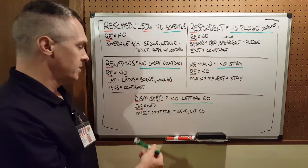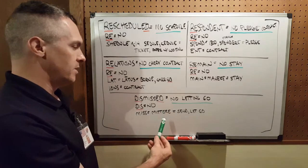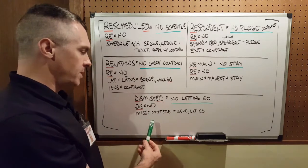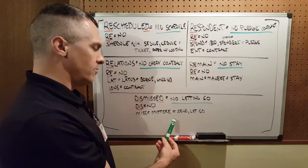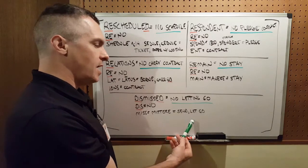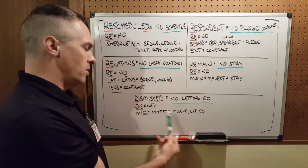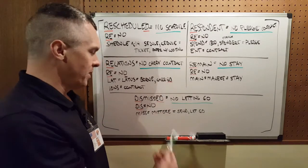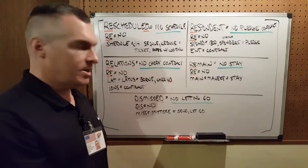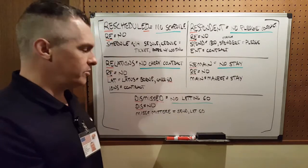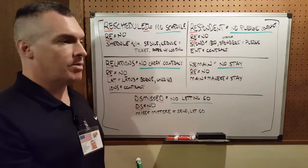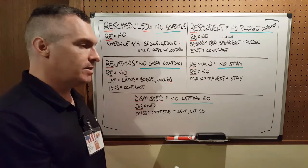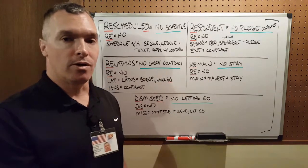And then the last word: 'dismissed.' DIS means no. MISS comes from 'meter,' which means to send or to let go. So dismissed means no letting go. And when you put the ED on the end of it, it's no letting go in the past. So you're talking about a fiction thing that happened in your imagination in the past where you weren't letting go of something.